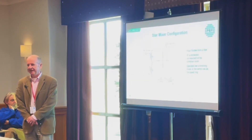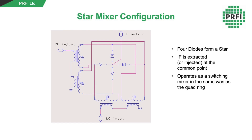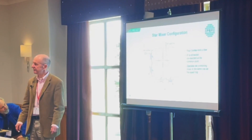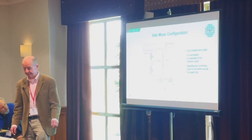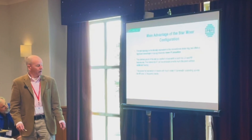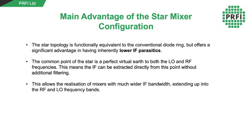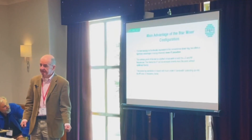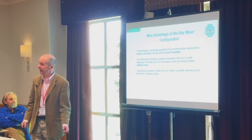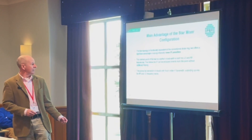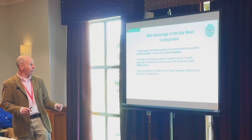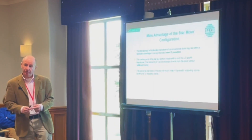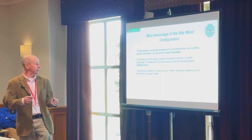This is a star mixer. It looks dreadfully complicated with these weird balun structures, and indeed it would be if you had to build it out of wire-wound transformers. Fortunately, there's quite a nice, elegant way of realizing these baluns using the Marchand balun structure, and we'll come on to that. The main advantages of using a star mixer are: it's functionally equivalent, but the IF parasitics are a lot lower, which means you can have a much wider IF bandwidth. The common point of the star mixer is a virtual earth to both the LO and the RF, so you can extract the IF at that point.